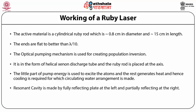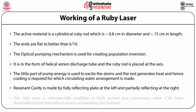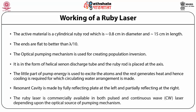The resonant cavity is made by a fully reflecting plate at the left and a partially reflecting plate at the right. The ruby laser is commercially available in both pulsed and continuous wave forms, depending upon the optical source of the pumping mechanism.